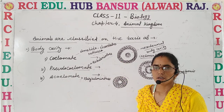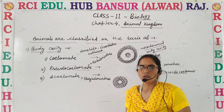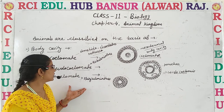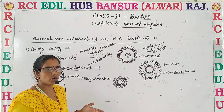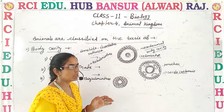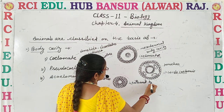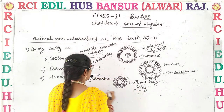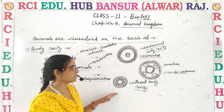They do not have a true body cavity but it resembles a body cavity. The third category is acoelomate — when the organism does not have a coelomic cavity, those are known as acoelomate, meaning without body cavity. Platyhelminthes mainly come under this category.